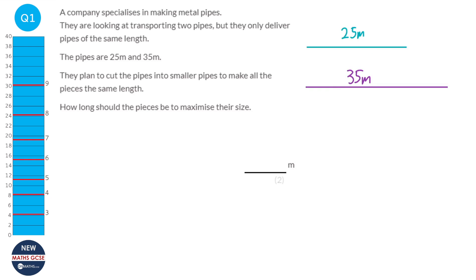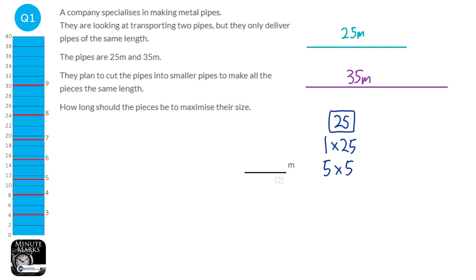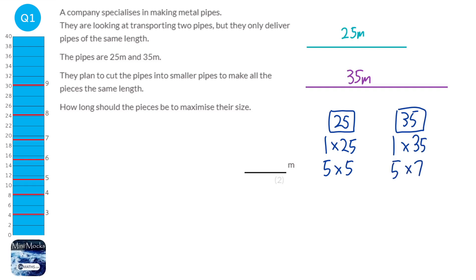To find the highest common factor, we find the factors of 25, which are 1, 25, 5, and 5; and the factors of 35, which are 1, 35, 5, and 7. The highest common factor is the highest number in both lists, so it's 5. We can cut all of these pipes into 5m pipes.